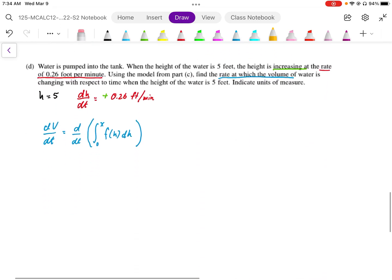In part D, it says the water is pumped into the tank when the height of the water is 5 feet. The height is increasing at a rate of 0.26 feet per minute. So first of all, we need to identify where we're going to be doing this calculation. It's going to be at height equals 5.